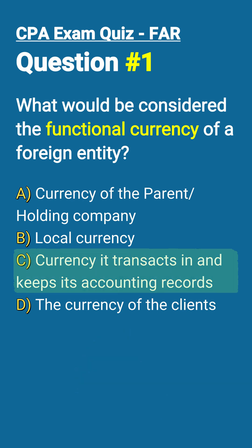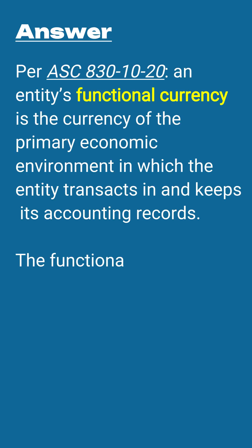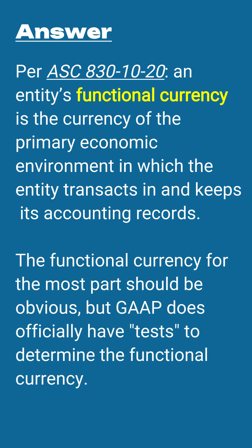The answer is C — it's the currency it transacts in and keeps its accounting records in. Per ASC 830-10-20, an entity's functional currency is the currency of the primary economic environment in which the entity transacts in and keeps its accounting records. The functional currency for the most part should be obvious, but GAAP does have some official tests to determine the functional currency if it is not obvious.